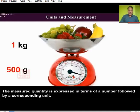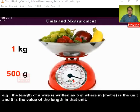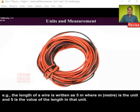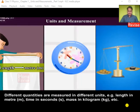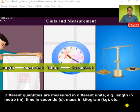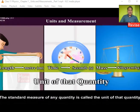A measured quantity is expressed in terms of a number followed by the corresponding unit. For example, the length of a wire written as 5 meters — here 'meter' is the unit and '5' is the value of length in that unit. Different quantities are measured in different units, for example length in meter, time in second, and mass in kilogram. The standard measure of any quantity is called the unit of that quantity.